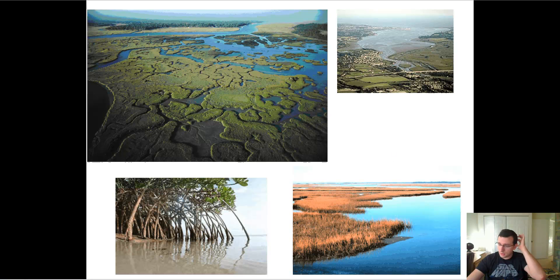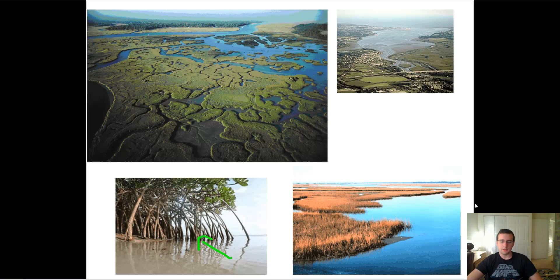There are two main types of estuaries. In tropical areas where there's a lot of sunlight and a lot of nutrients, they get to grow trees — mangroves — these kinds of trees with big roots and very specialized roots to handle the salty situation actually dominate these kinds of estuaries.